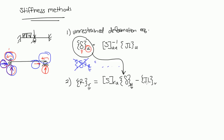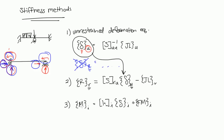Finally, equation number three: M_I = K_I × δ_I + FM_I. Say we have a beam with a fixed end, an intermediate support, and another support — we have element one between the first two joints and element two between the last two. The subscript I stands for each element, so we write one equation for element one and one for element two.